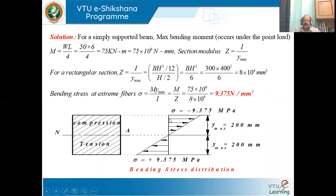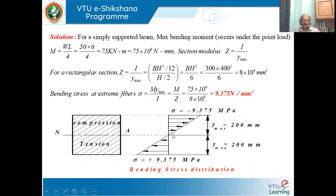To draw the stress distribution, draw a vertical reference line intersecting the neutral axis. On one side show tensile stress and on the other side show compressive stress — they cannot be in the same direction. The stress distribution is triangular (linear variation from zero at the neutral axis to maximum at the outer fibers), and this triangular distribution applies irrespective of the cross section shape.